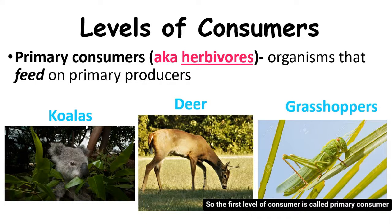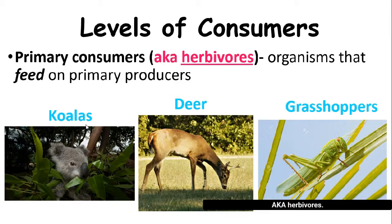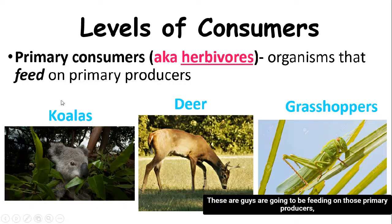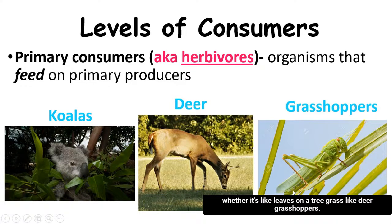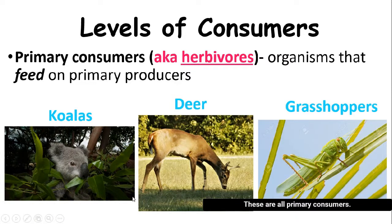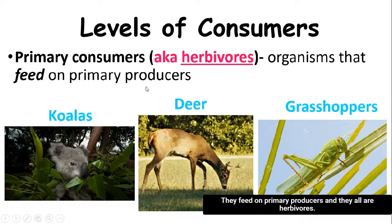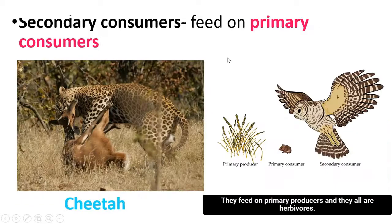The first level of consumer is called the primary consumer, also known as herbivores. Primary consumers feed on those primary producers — whether it's leaves on a tree, grass, like deer or grasshoppers. These are all primary consumers: they feed on primary producers and they are all herbivores.